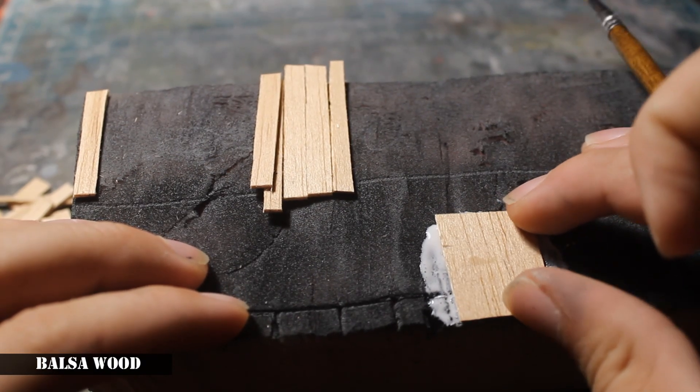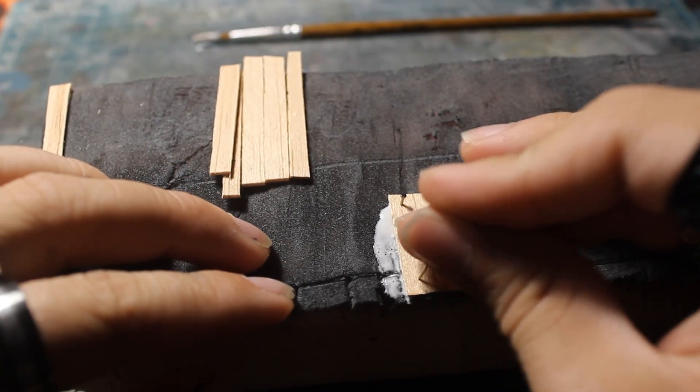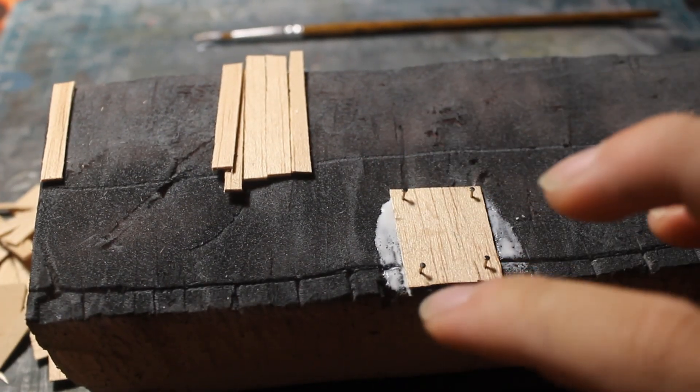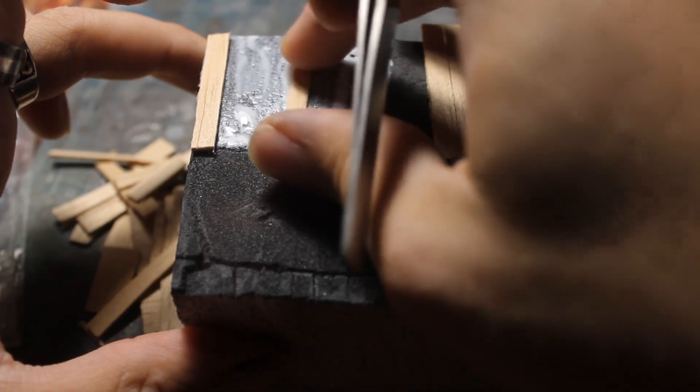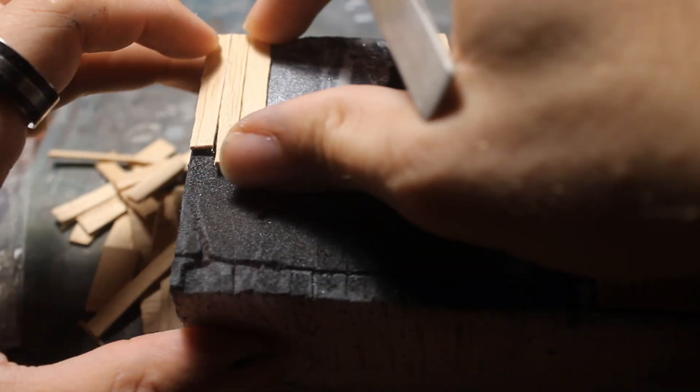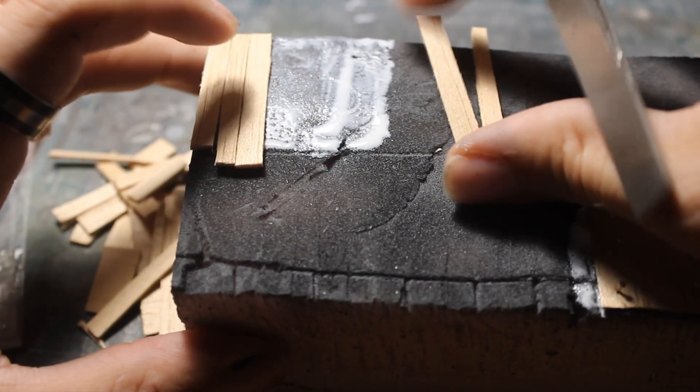For small details on the house, I use balsa wood to make something like a door, and of course I use balsa wood planks to make the houses a little bit more lively.